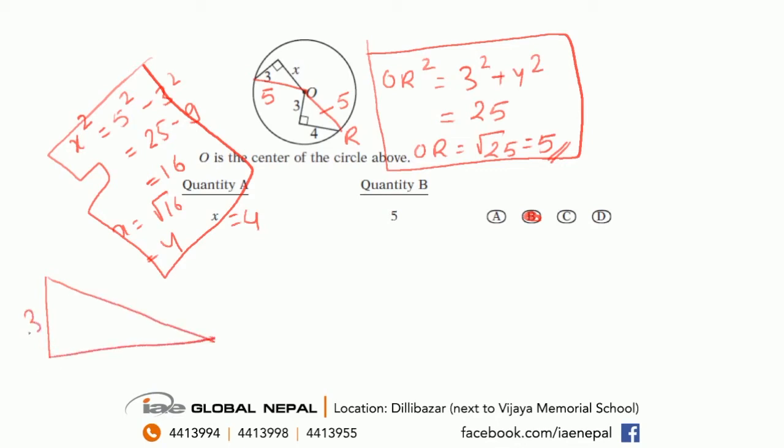So one of them, one triangle is 3-4-5. So whenever there's a right angle triangle with side 3 or side 4, then automatically your side is 5. Or if you see 5 and 3, automatically it's 4.